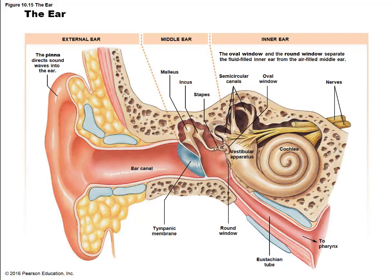Introducing the anatomy of the ear: the ear is divided into three components. We have the external ear, which includes the pinna, the external ear canal, and the tympanic membrane. The middle ear is the area between the tympanic membrane and the oval window, including parts of the eustachian canal. The inner ear is the neural side of the conduction pathway, starting at the oval window and including the cochlea, the cochlear nerve, and the vestibular nerve.